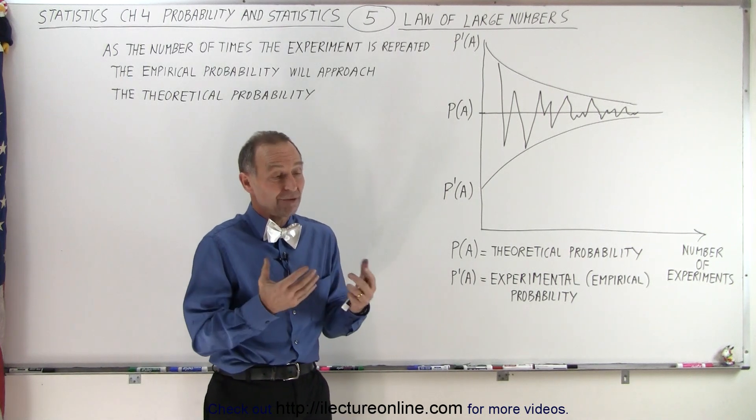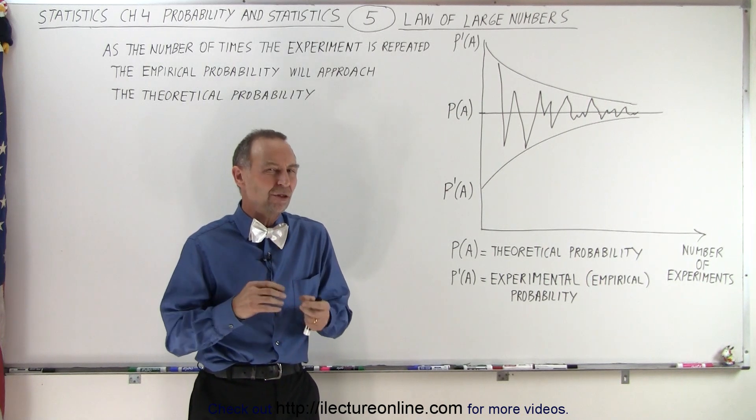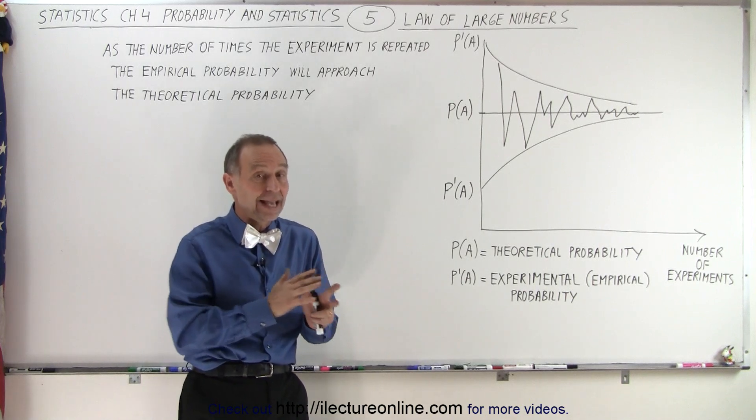In other words, if you toss a coin 10 times, you might get 9 heads and 1 tail. But if you toss a coin 100 times, it's not likely you'll get 90 heads and 10 tails.